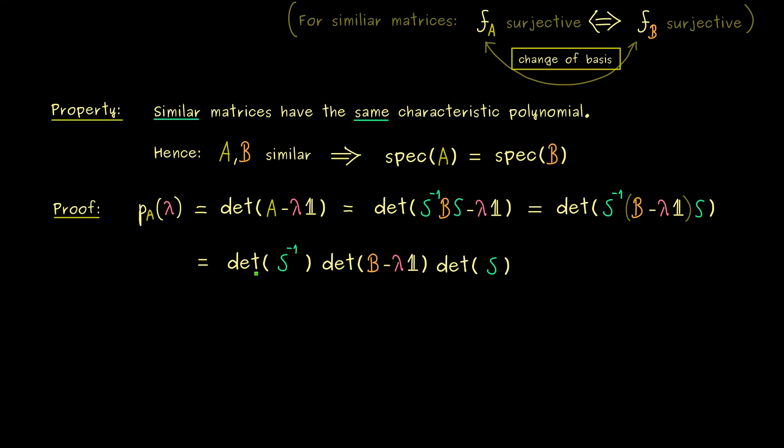Therefore, we only have to take care of the determinant of S inverse and the determinant of S. And indeed, if we use the multiplicativity of the determinant again, we immediately get the determinant of the identity matrix here. And of course, there we already know, this is simply 1.